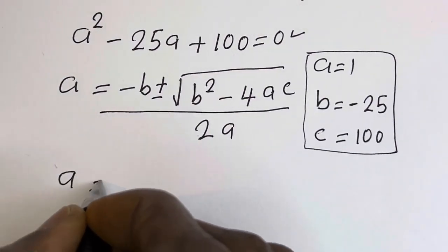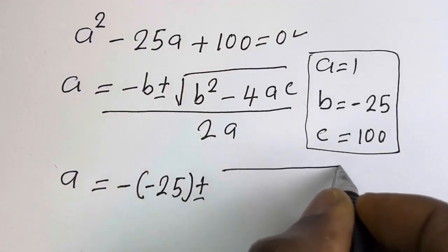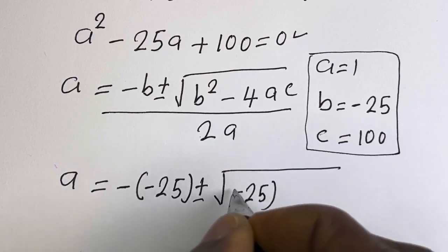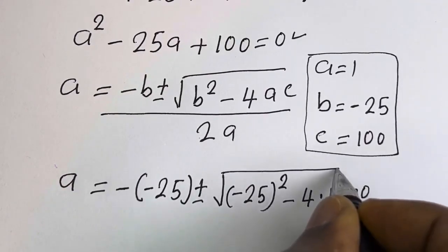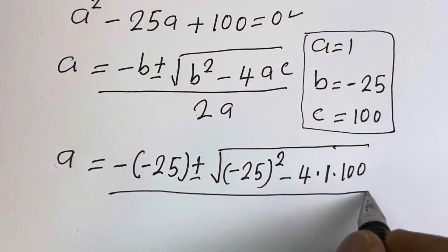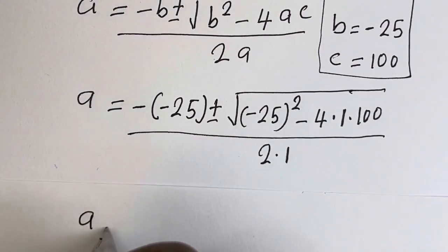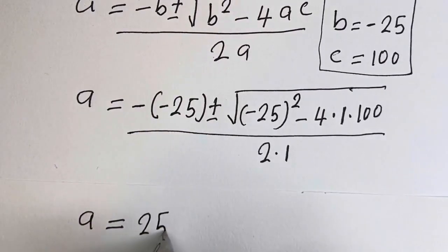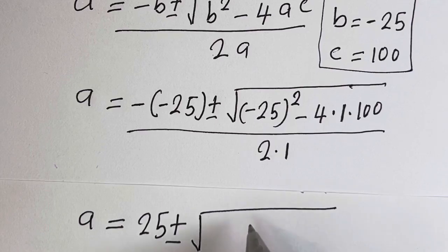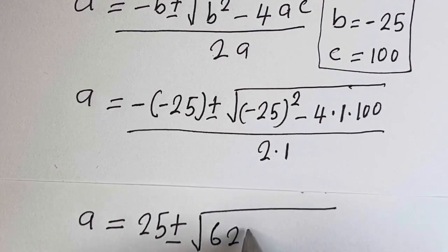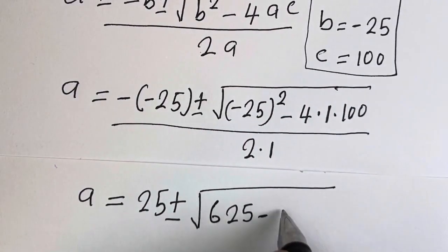Therefore, A is equal to minus (minus 25), plus or minus square root of (minus 25) squared, minus 4 multiplied by 1, multiplied by 100 — that is 400 — everything divided by 2 multiplied by 1. This gives 25, plus or minus square root of 625 minus 400, that is 225.